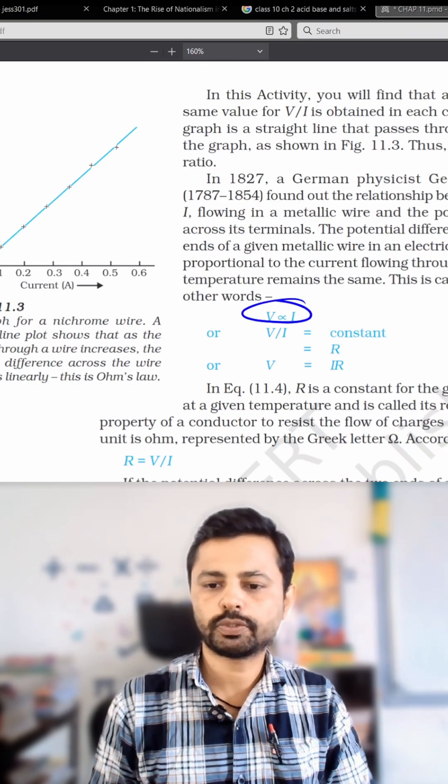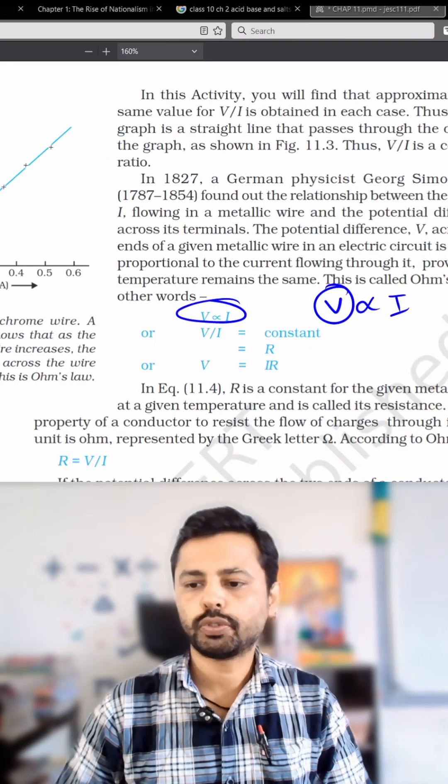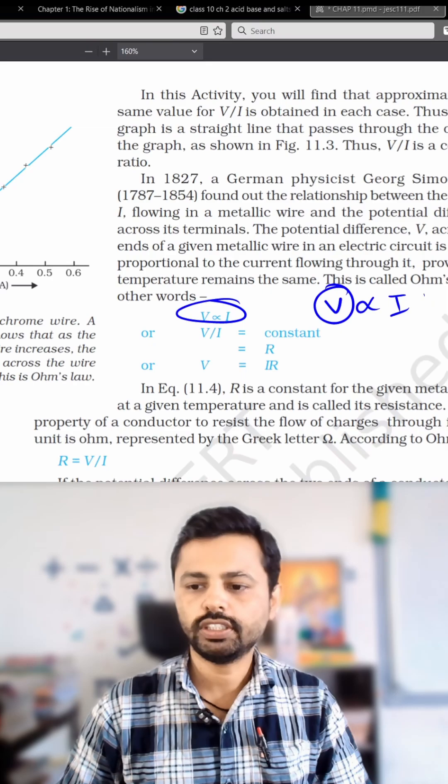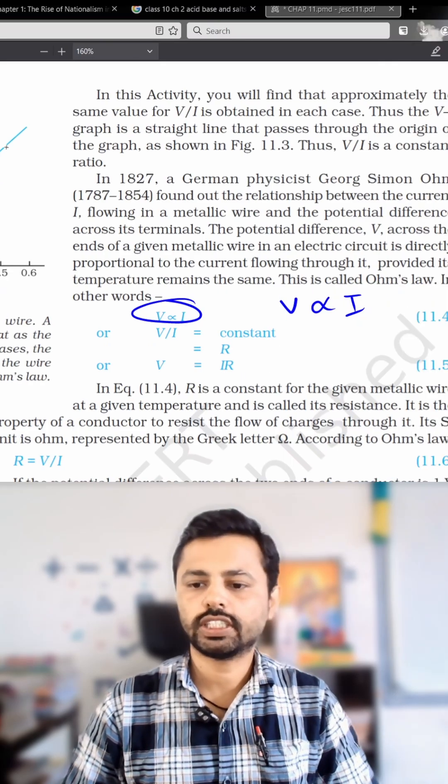Ohm's law states that V is proportional to I, where V is the potential difference or voltage and I is the current. Let's check it.